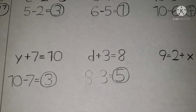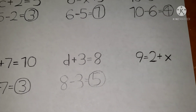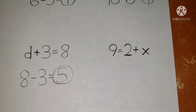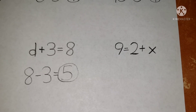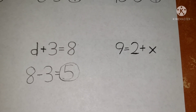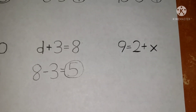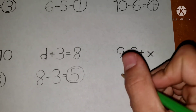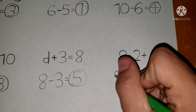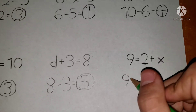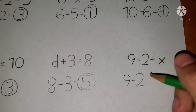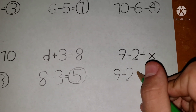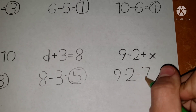This is easy, guys — don't you think this lesson from grade seven is very easy? Last but not least, nine equals two plus x. You make it nine minus two. What's the final answer? Equals seven.